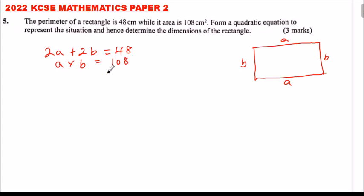So these two equations we can use them to solve to get the value of a and b. This implies that if we divide throughout by 2, it means a plus b equals 24, which we can say a equals 24 minus b.